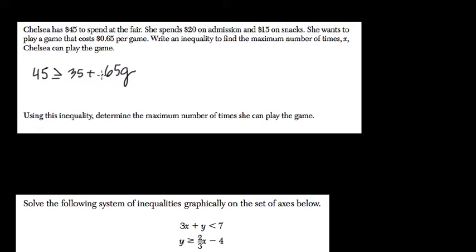So this is it, because $0.65 times the number of games plus the $35 spent has to be less than or equal to the $45 she has to spend. Now they ask us to solve this. So that's a pretty common second step here.